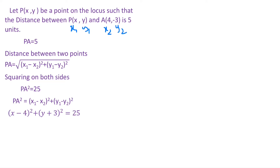So we have (x - 4)² + (y + 3)² = 25. Now we will expand this: (x - 4)² is in the form (a - b)² = a² + b² - 2ab, and (y + 3)² is in the form (a + b)² = a² + b² + 2ab. Here a = x, b = 4 for the first, and a = y, b = 3 for the second.